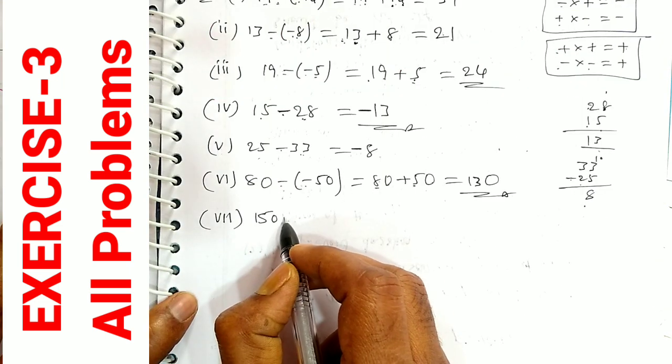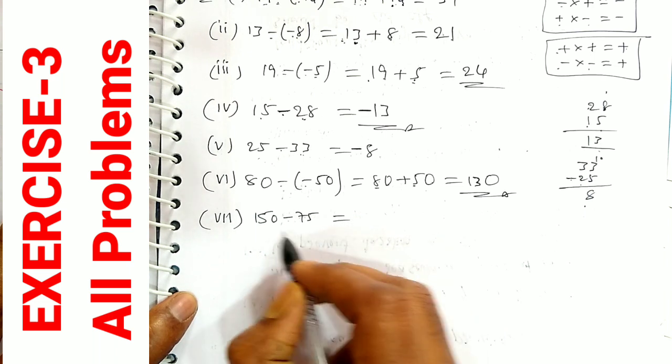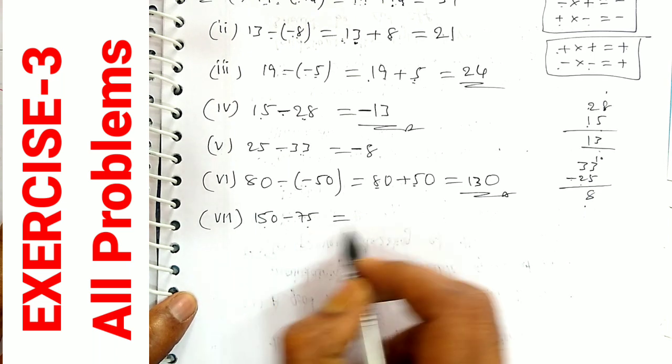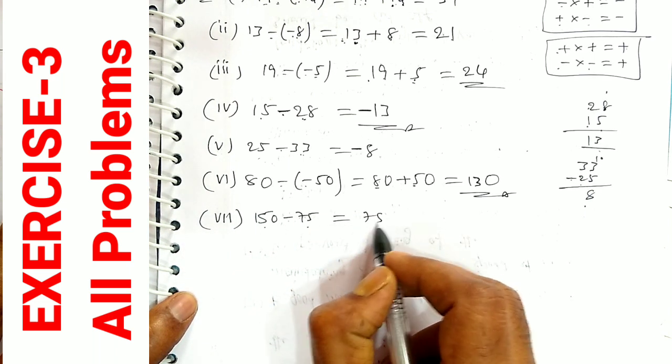Seventh part: 150 minus 75. 150 minus 75 is the answer.